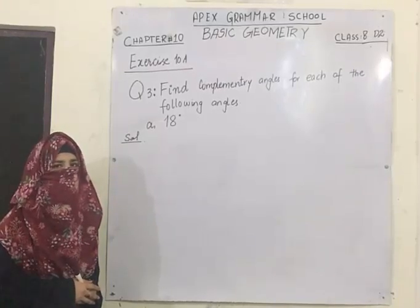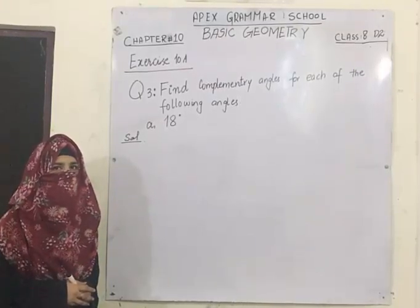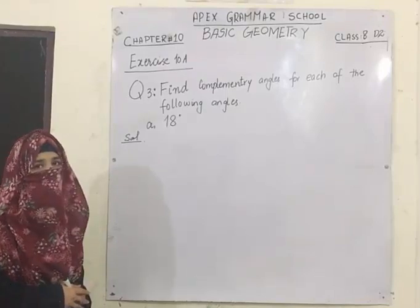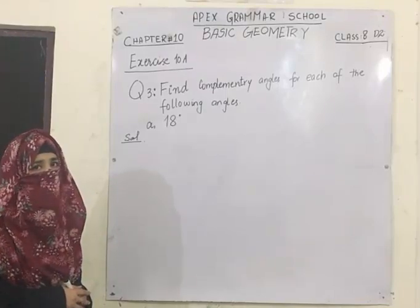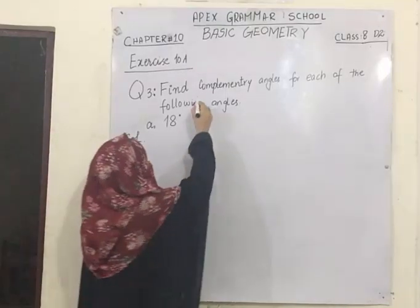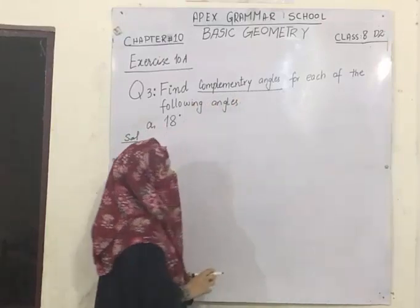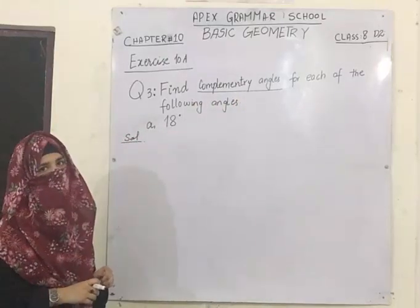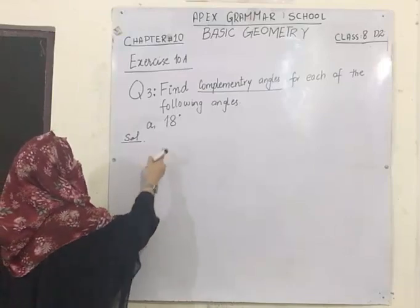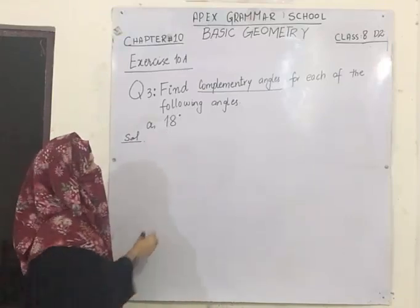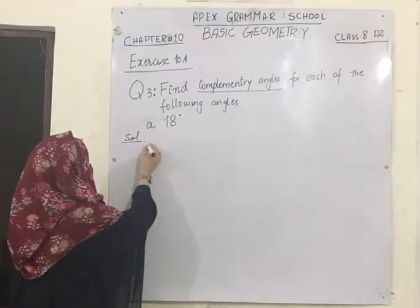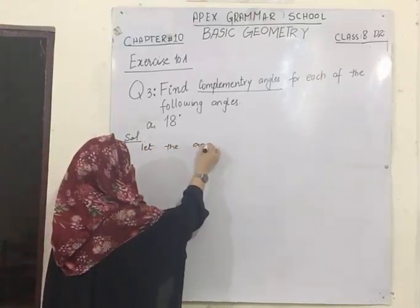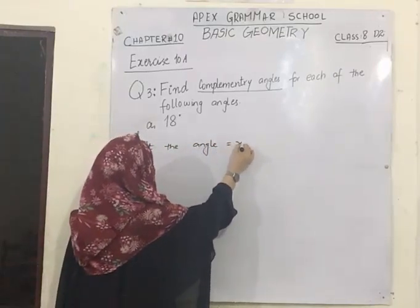We are going to start Exercise 10A. I have taken start from question number 3, in which we have to find the complement angle. Remember that complementary angles add up to make 90 degrees. You are given one angle and you have to find the other angle. Let the unknown angle be x.